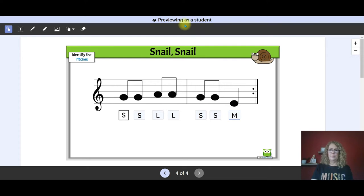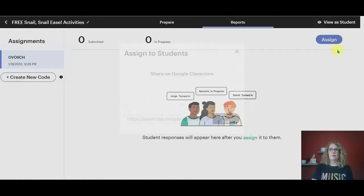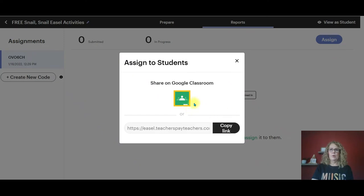Now let's close out the preview student view and we're going to look back up here. If you want to assign this to individual students, this assign tab is where you'll do that. You can assign it through Google Classroom or you can copy a link. You can post this link as an assignment using your school's LMS or send it by email.